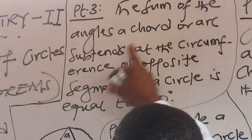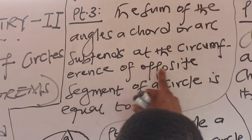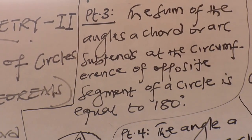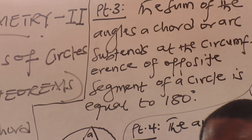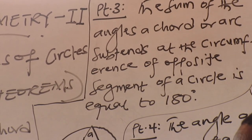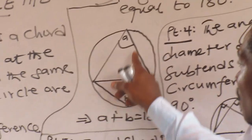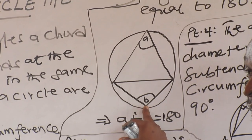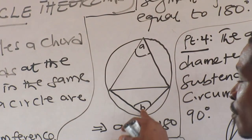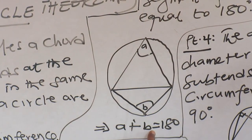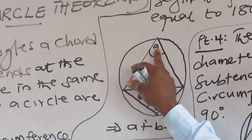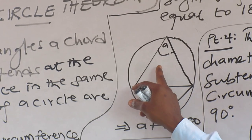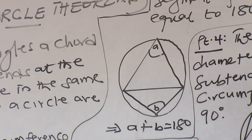Property three (BT3): the sum of the angles a chord subtends at the circumference of opposite segments of a circle equals 180°. Opposite means face to face. The chord forms an angle here and the same chord forms an angle on the opposite side — A plus B equals 180°. They are supplementary.